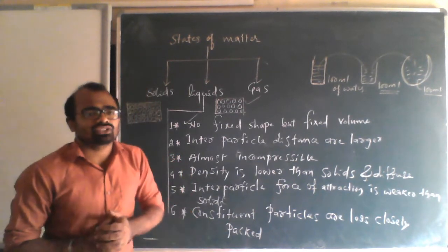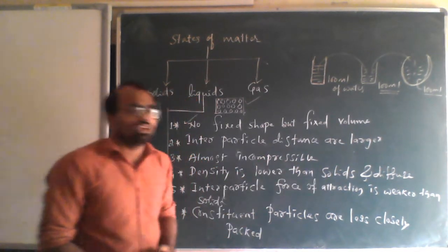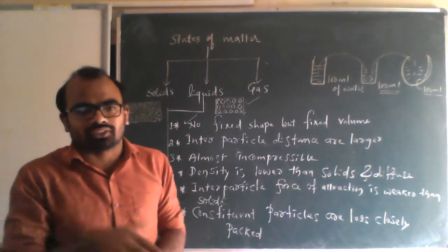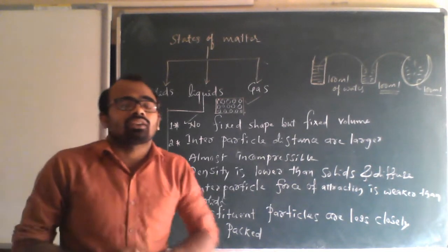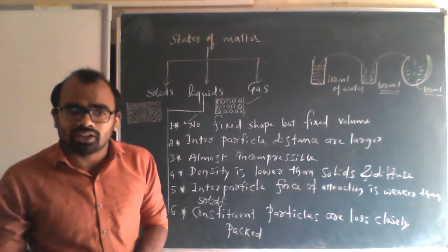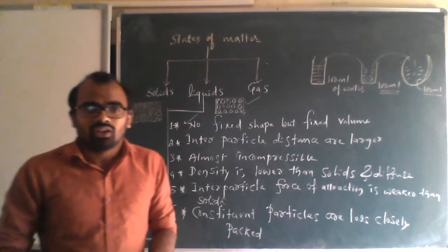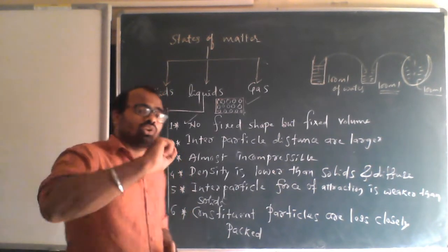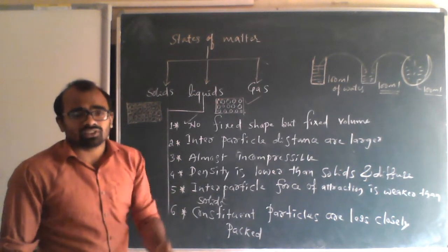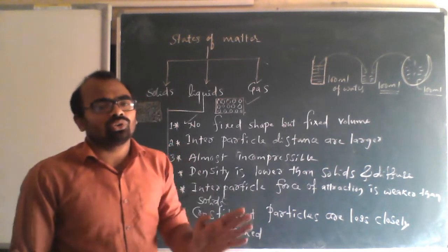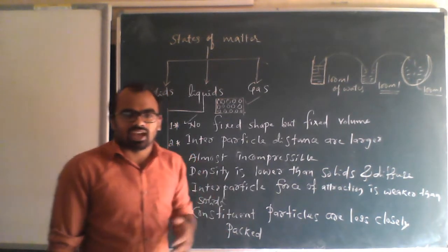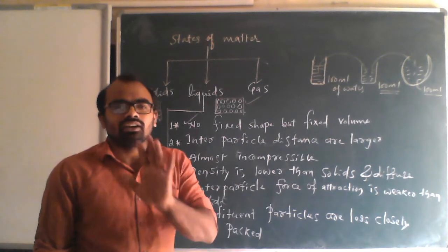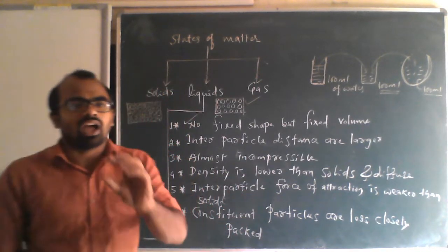One important question that might come: why does ice float on water? Even though ice is a solid, its density is very much less compared to water. About 90% of liquids have less density compared to solids, but ice is a special case where the solid has very less density compared to its liquid form — hence ice floats on water.